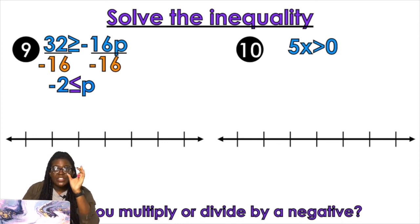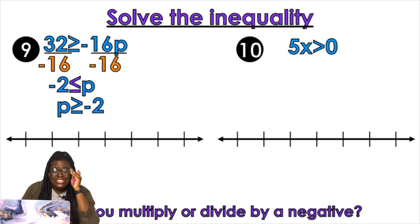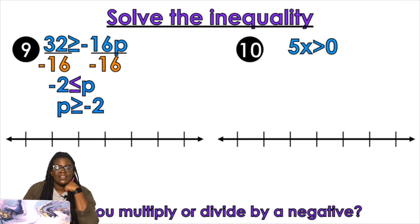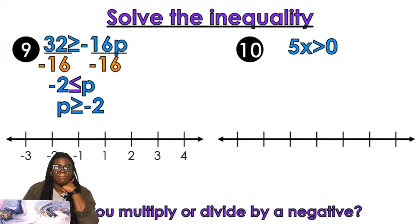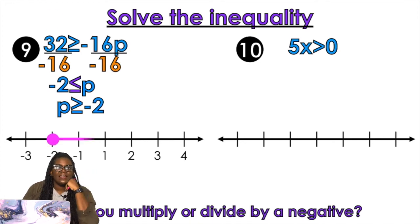Remember, we don't like the p to be on that side of the equation — we want p on the other side because it helps me graph flawlessly. So we're going to switch the p and the negative 2, and then flip the symbol again. Open circle or closed circle? Closed. Left or right? Right.